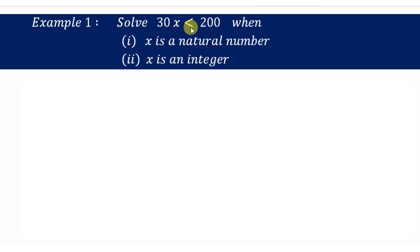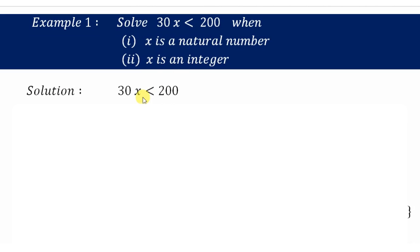Example 1: Solve 30x is less than 200 when x is a natural number and when x is an integer. First, let's solve for x: 30x less than 200 gives x less than 200 divided by 30, which is approximately 6.66. So x is less than 6.66.